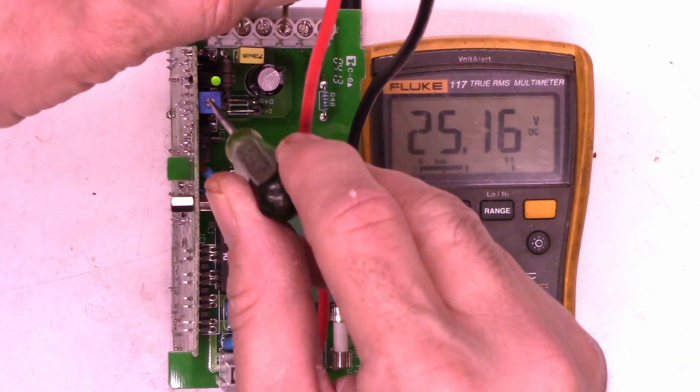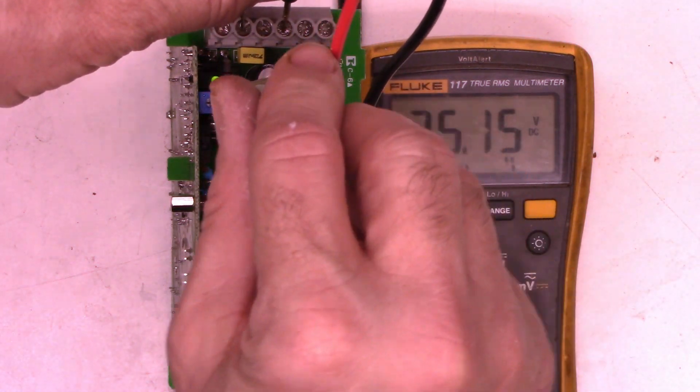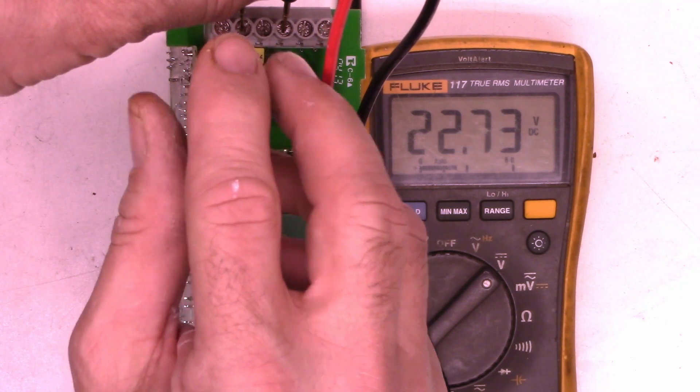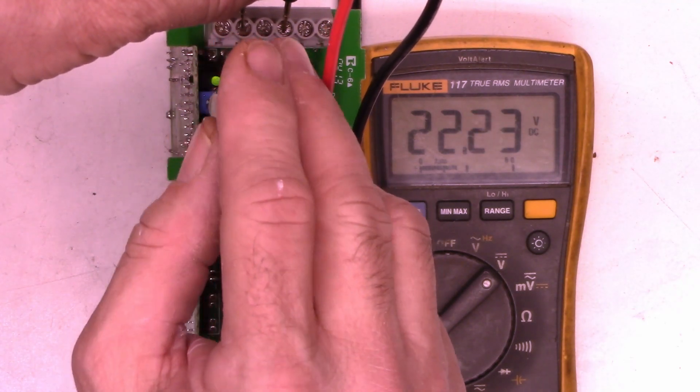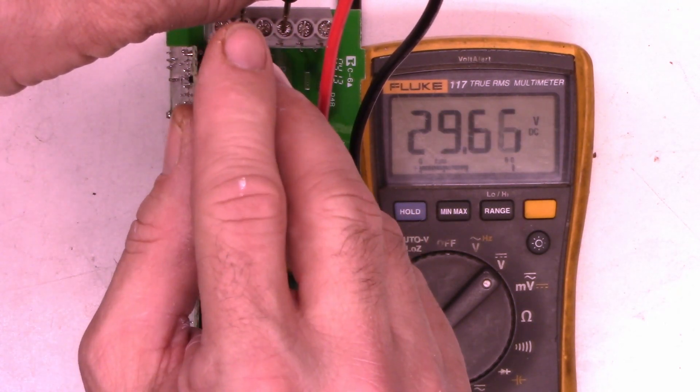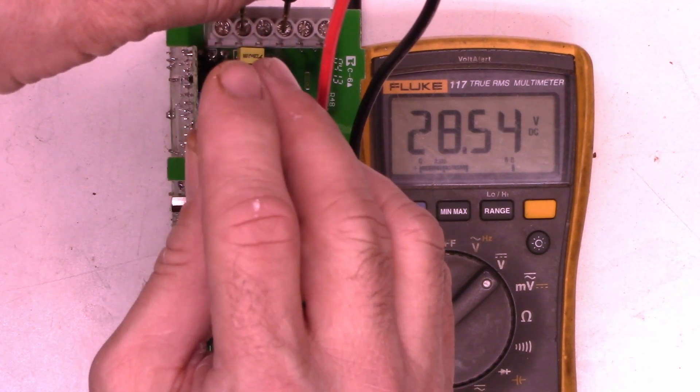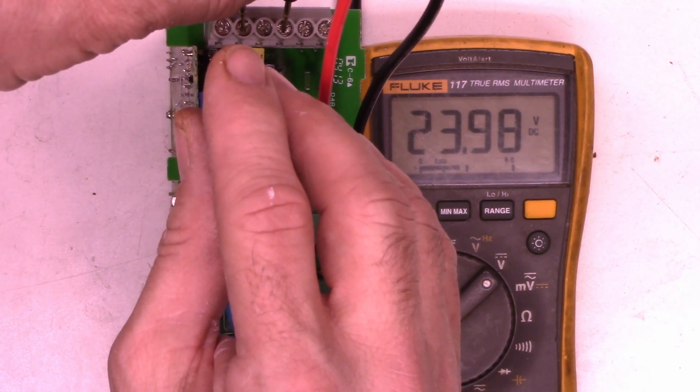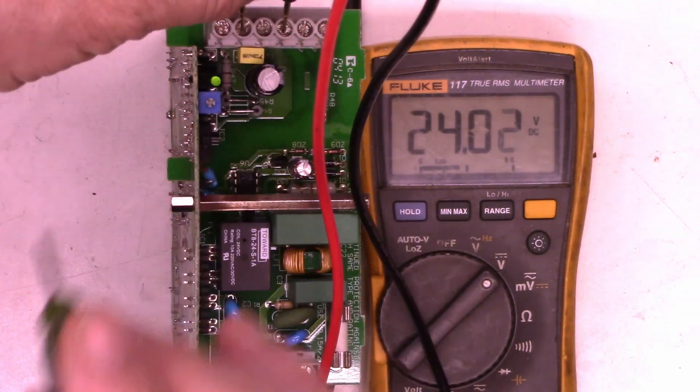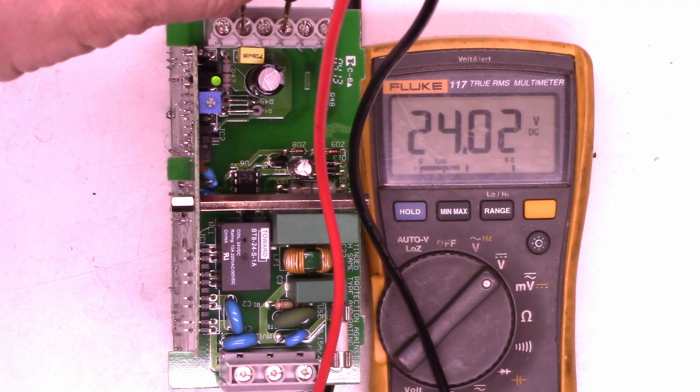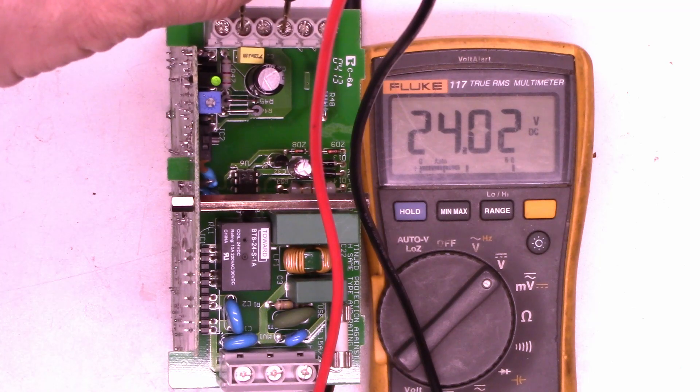Now this has a little trim pot right here that allows you to vary the voltage. 22.2 all the way up to 29.6. So because it's a 24 volt power supply, let's go ahead and set it to 24 volts. So it appears to be working.